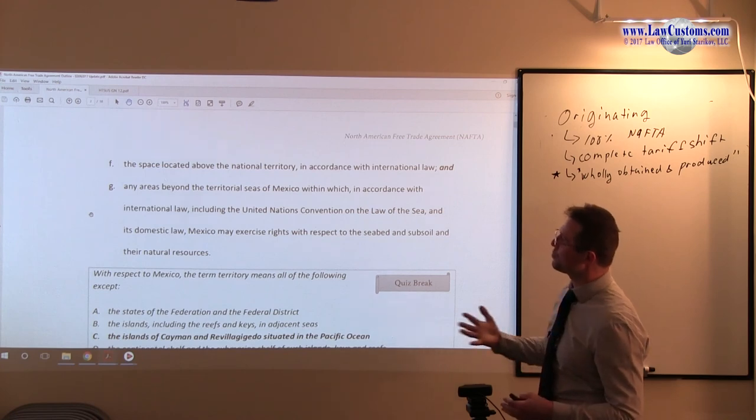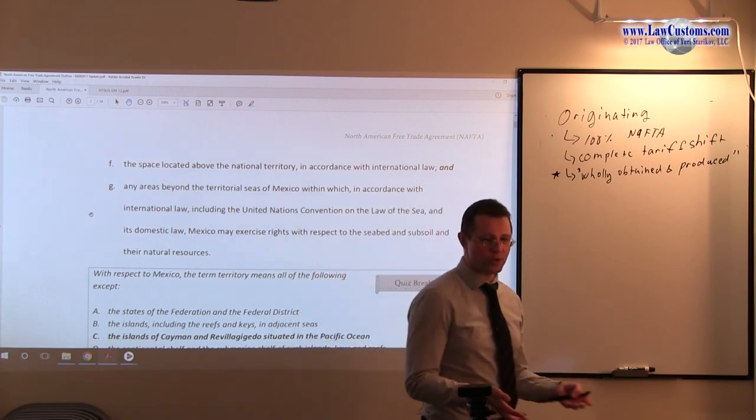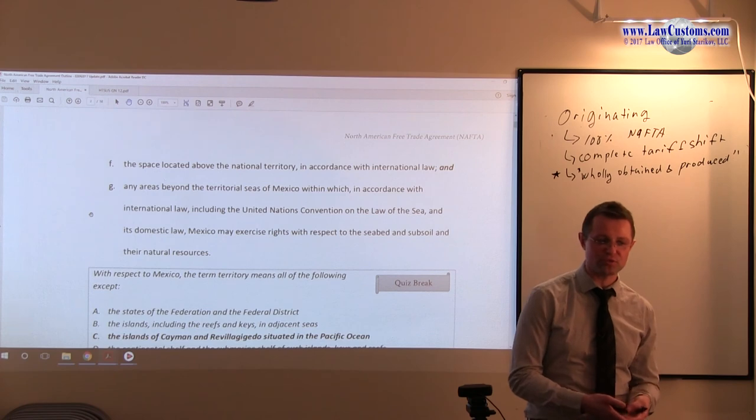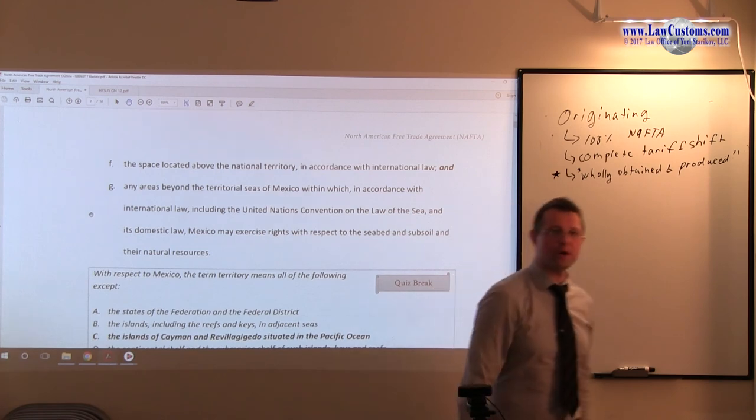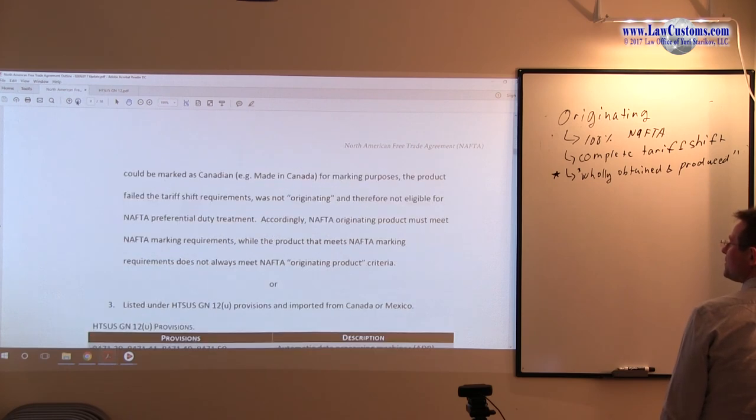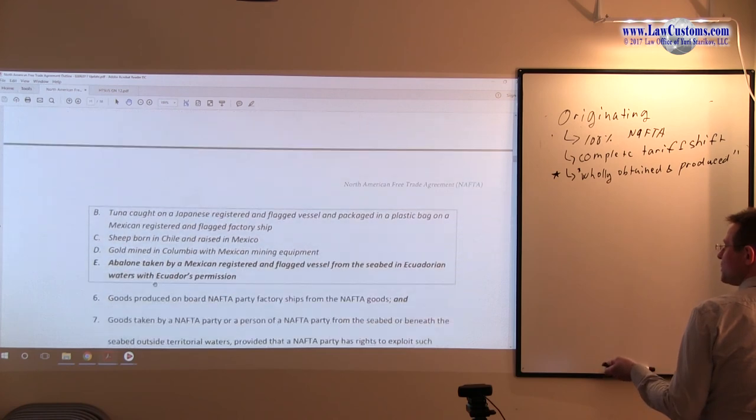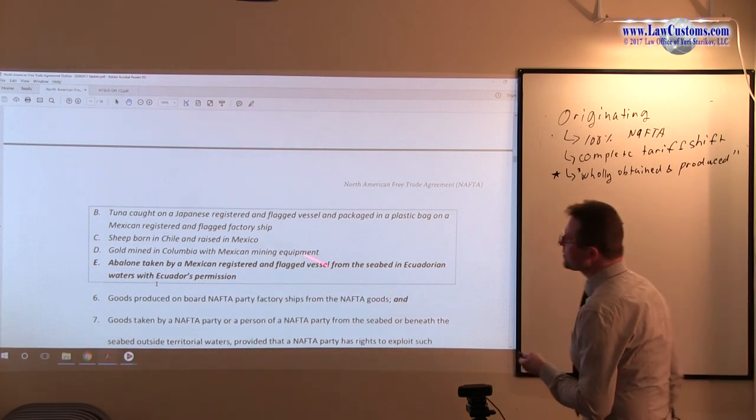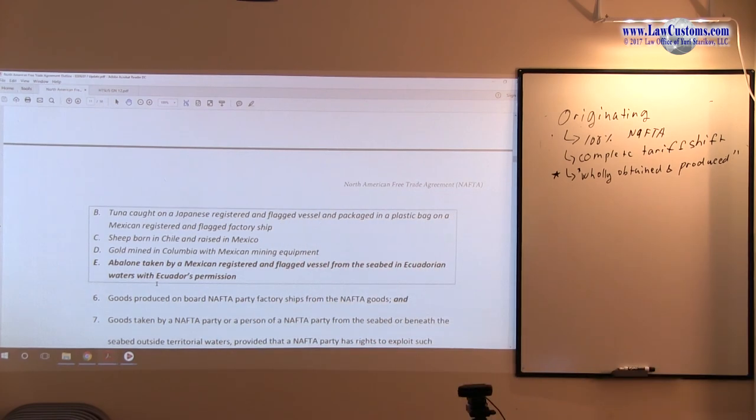Because the international law meaning that you have the agreement between Ecuador and Mexico to conduct certain exploration activities, certain hunting activities, certain fishing activities. So that would be an example of making the product qualifying for the NAFTA good under this particular example. So therefore, this good will qualify for NAFTA because it is a Mexican registered vessel and because there was Ecuador's permission and that was in accordance with international law.